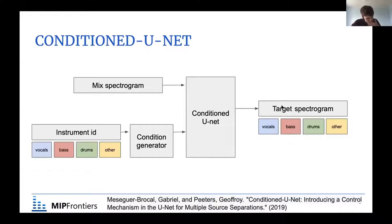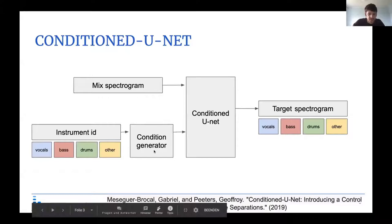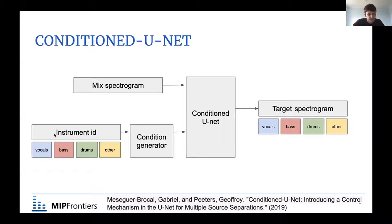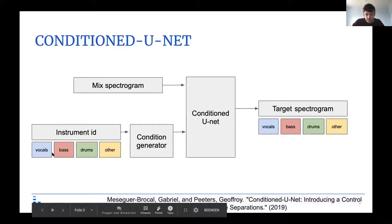Normally, if you want to separate singing voice, you train one network that only separates vocals; if you want to separate bass, you train another specialized network. The contribution of the conditioned U-Net was to introduce a conditioning mechanism with an additional input vector that encodes the idea of the instrument you want to separate. This vector goes into a small conditioning generator network that learns how to modulate the internal representations so the desired source comes out as output, allowing all sources to be separated with the same network depending on the conditioning vector.